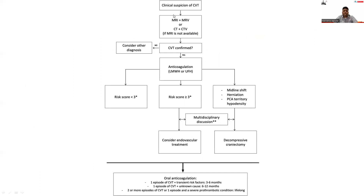As a summary of clinical management: when there is any clinical suspicion of cerebral venous sinus thrombosis, the ideal diagnostic test is MRI with MR venogram. If MRI with MR venogram is not available, then perform CT with CT venogram. If CSVT is confirmed, start anticoagulation with either low molecular weight heparin or unfractionated heparin. If the diagnosis is not obvious, consider other diagnoses. When proceeding to anticoagulation, the prognostic risk score must be assessed.